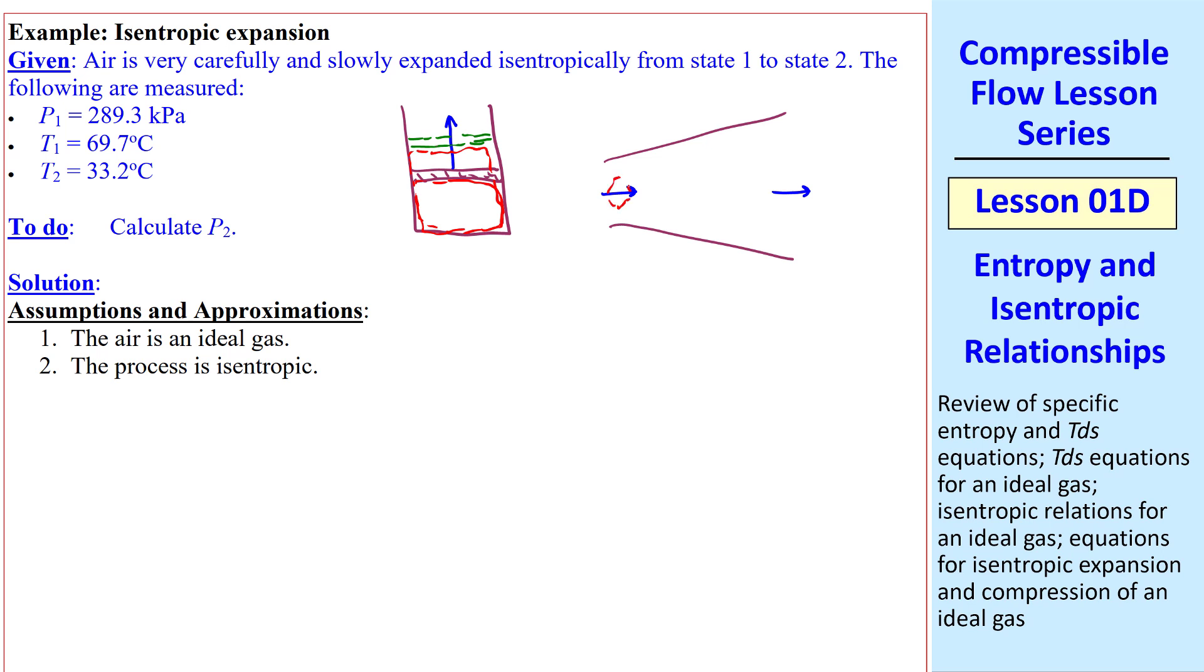In a compressible flow problem, this is analogous to flow through an expanding duct. In the piston case, as the piston moves slowly up, the gas expands. In the flow situation, some parcel of fluid there expands to a bigger volume here, where we would typically call this 1 and 2, or state 1 and state 2. Either way, we can calculate P2.